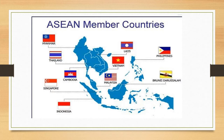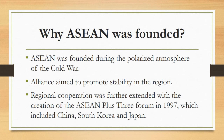There are currently 10 members of this organization, as displayed on the map. They include Indonesia, Malaysia, Philippines, Singapore, Thailand, Brunei, Laos, Myanmar, Cambodia, and Vietnam.